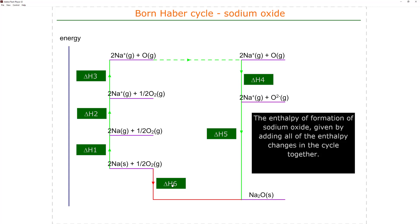The enthalpy change delta H6 is the sum of delta H1 plus delta H2 plus delta H3 plus delta H4 plus delta H5. This is the Born-Haber cycle of sodium oxide.